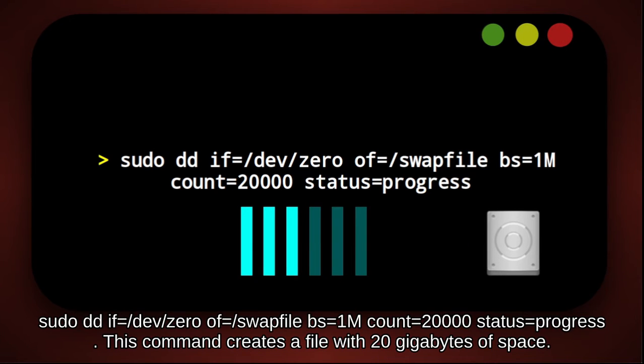sudo dd if=/dev/zero of=/swapfile bs=1M count=20000 status=progress. This command creates a file with 20 gigabytes of space.